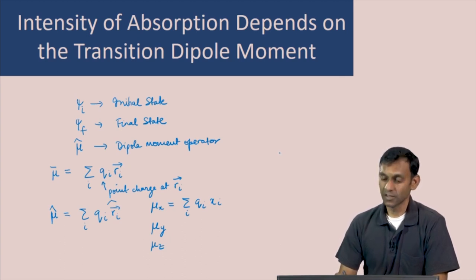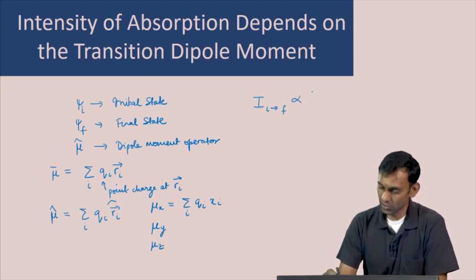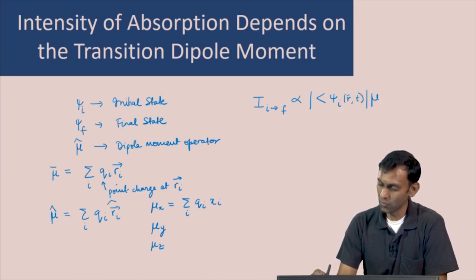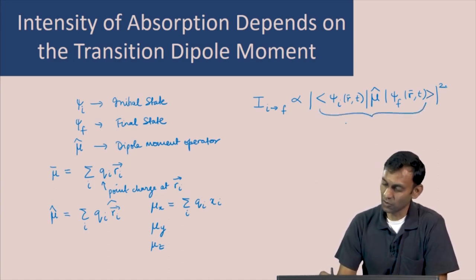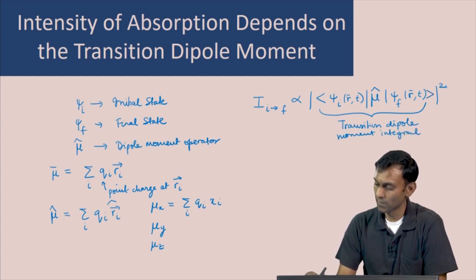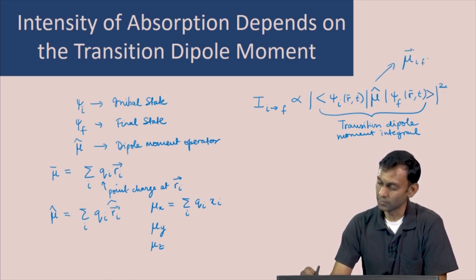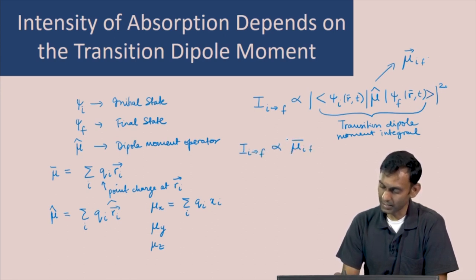The intensity of a transition from state i to state f is proportional to the square of the following integral: psi_i(r,t) times the mu operator times psi_f(r,t), the magnitude whole squared. This integral is called the transition dipole moment integral and is usually denoted mu_if. In other words, the intensity of the transition from i to f is proportional to |mu_if|².